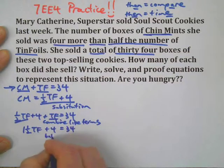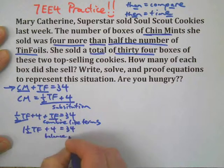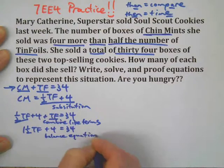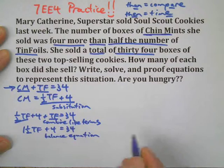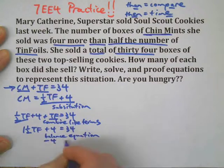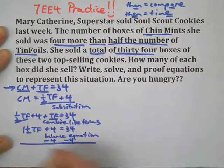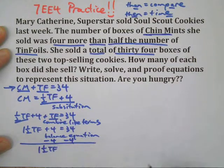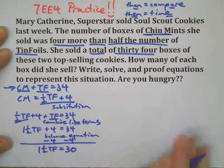Then we're going to balance the equation and isolate the variable. We want the letters on one side and the numbers on the other. So I'm going to take away four from both sides, which leaves us with one and a half times the number of boxes of Tin Foils equals 30.